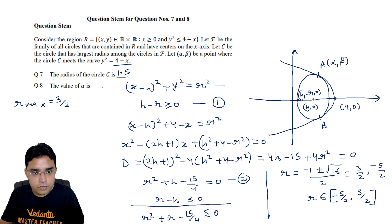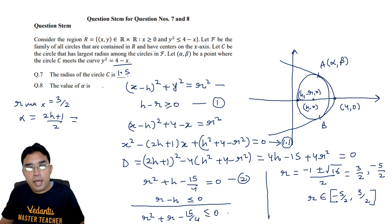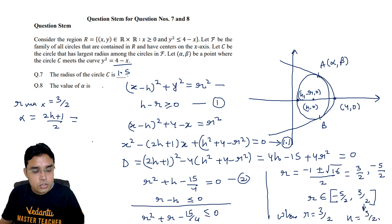So answer for question 7 is 1.5. Now to find alpha we have to find x coordinate of a or b. This can be found by solving this quadratic. From this if I find alpha, the root will just be (2h plus 1) upon 2 because discriminant is already 0 and h is 3 by 2, because when r max is 3 by 2 we are actually putting this in equation with equal to sign. When r will be equal to 3 by 2 then this h will be equal to 3 by 2 also. So if I put h as 3 by 2 this will become after solving 3 plus 1, 4 upon 2, which is 2 only. So value of alpha will be 2.